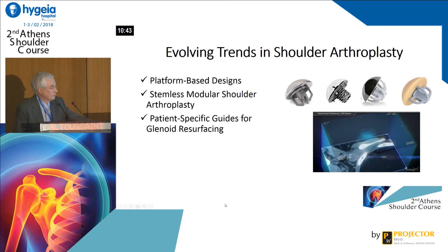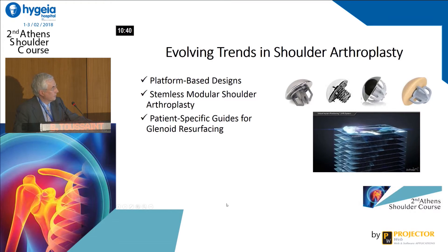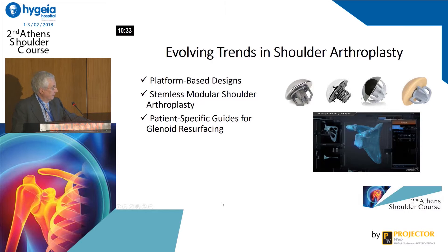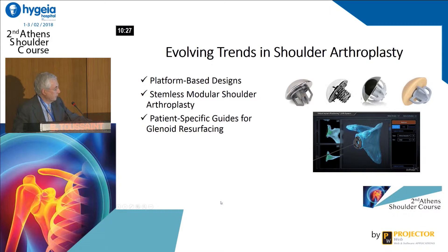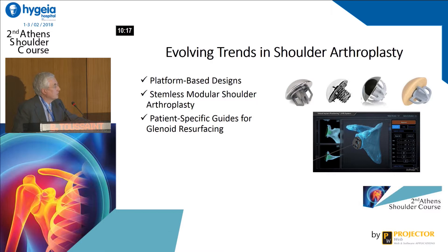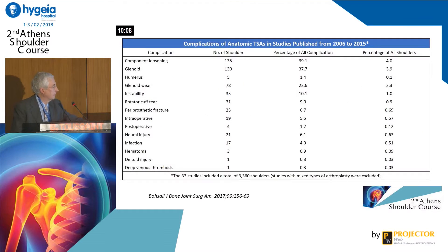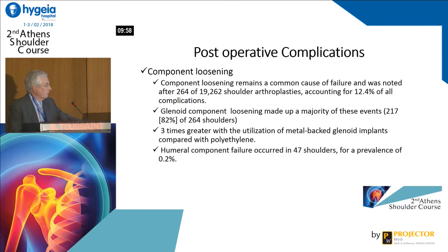Evolving trends in shoulder arthroplasty: obviously, you have new products to improve surgery outcomes. It's a platform-based design — the stemless modular shoulder arthroplasty — it's a good evolution. And patient-specific guides for glenoid resurfacing, or software to help choose the best positioning of the base plate on the glenoid side and ensure correct positioning. You can see the different complications and their percentages, and you see that component loosening is the first one.